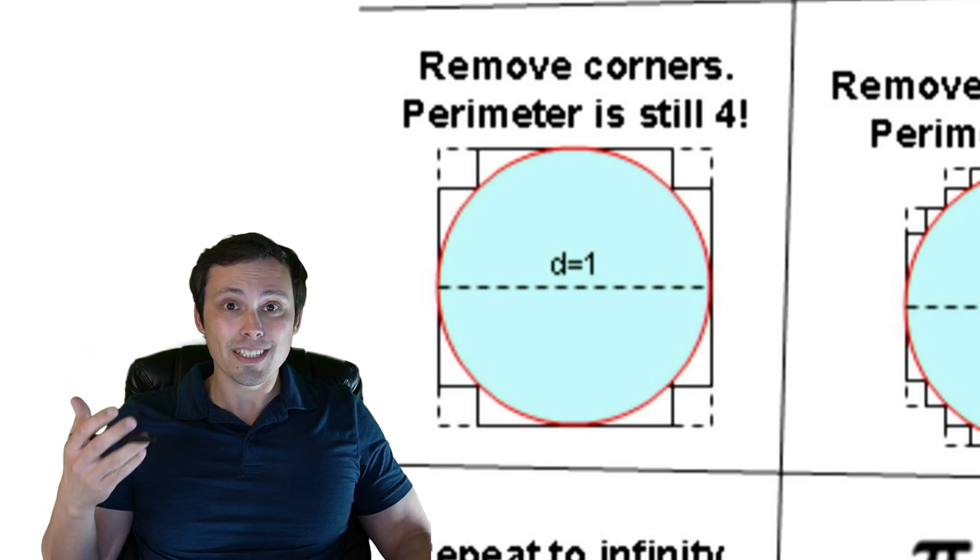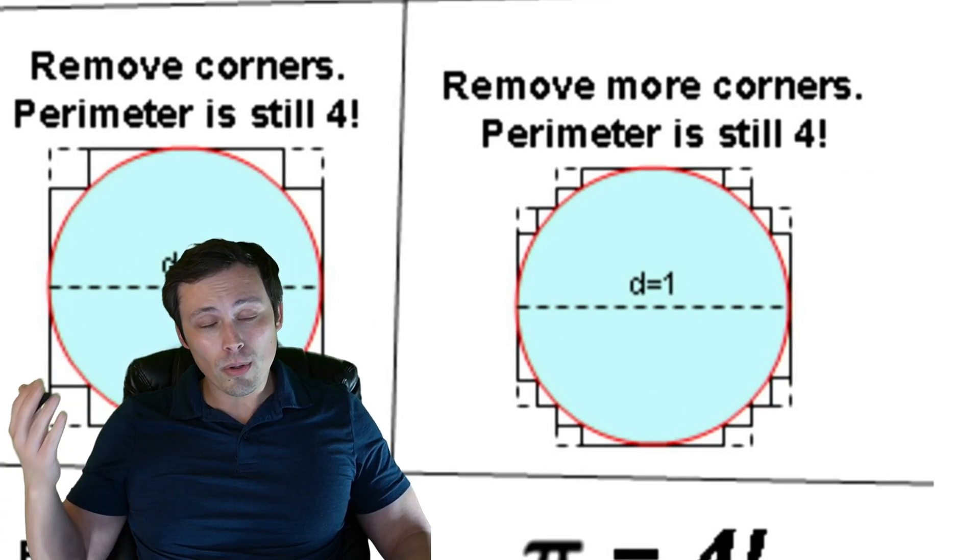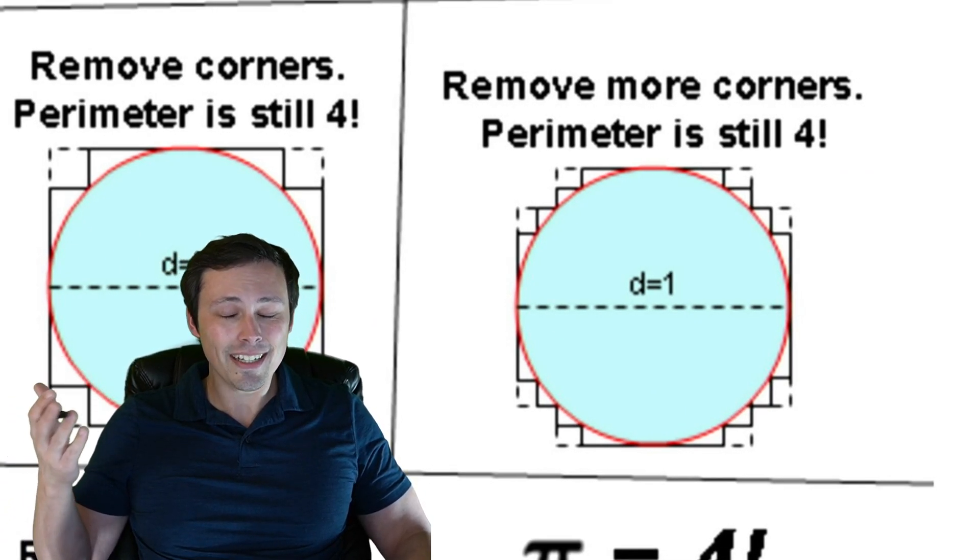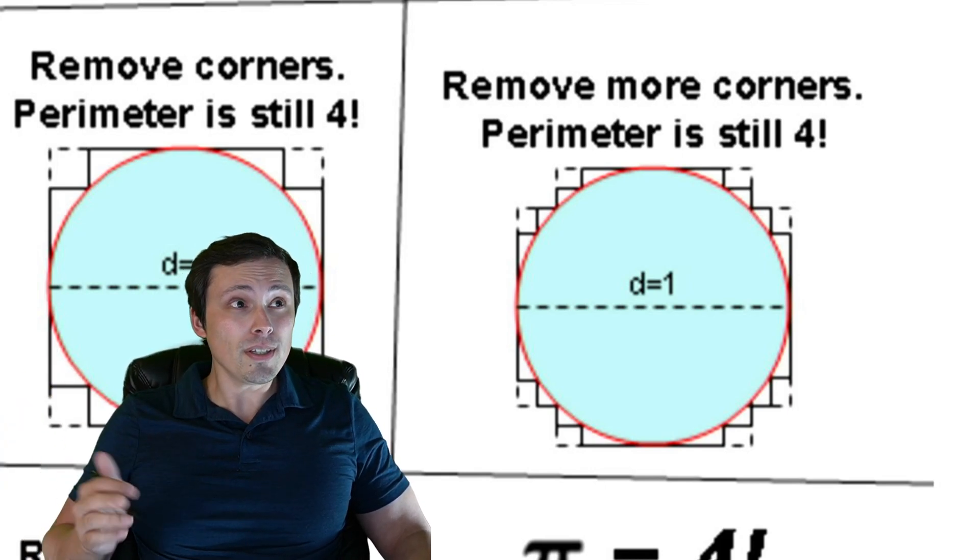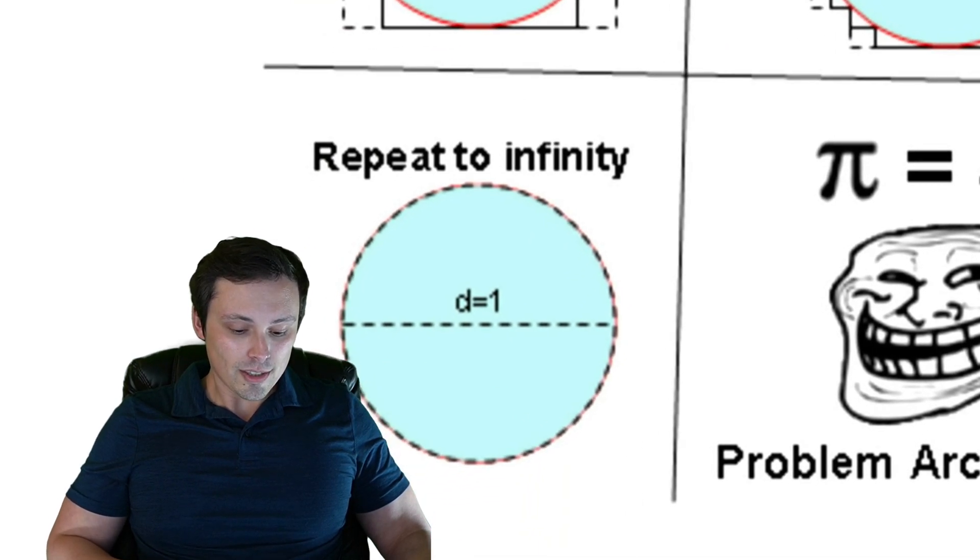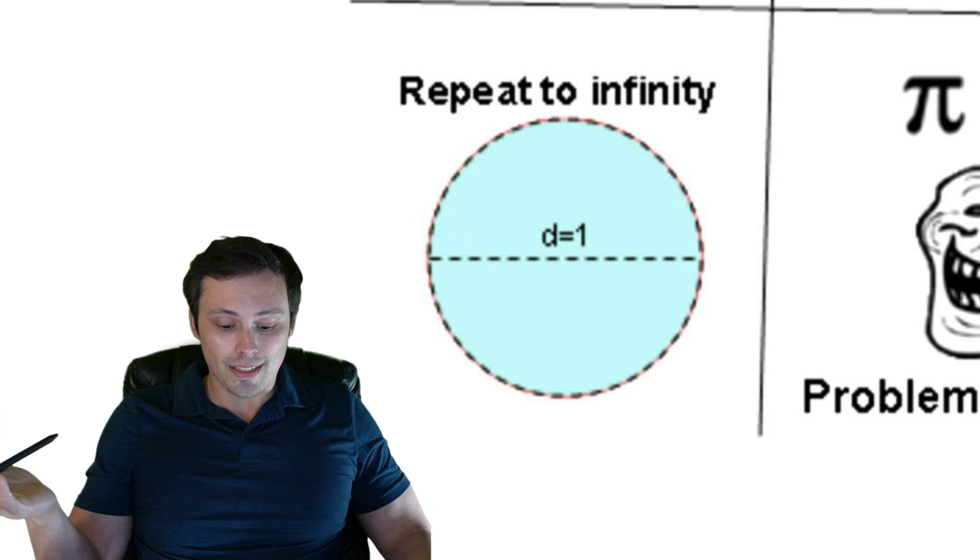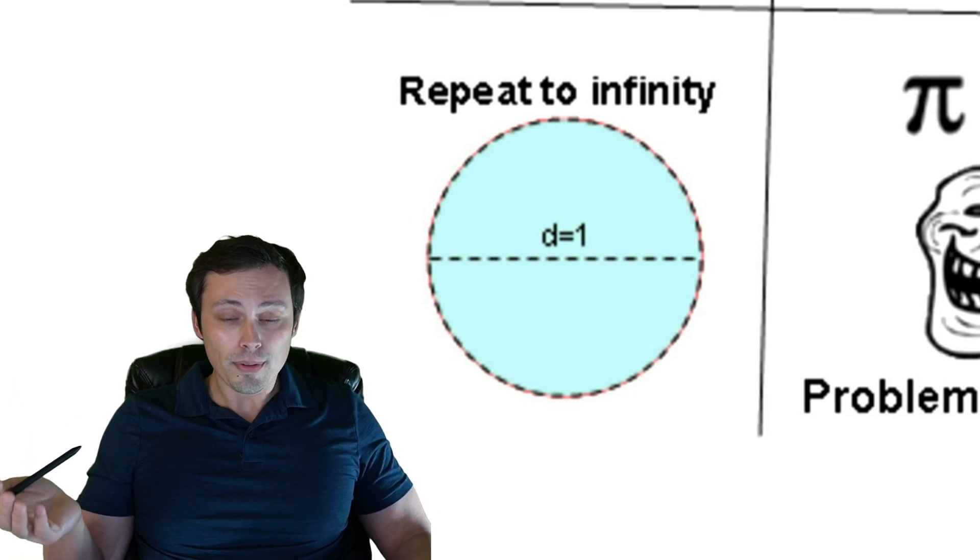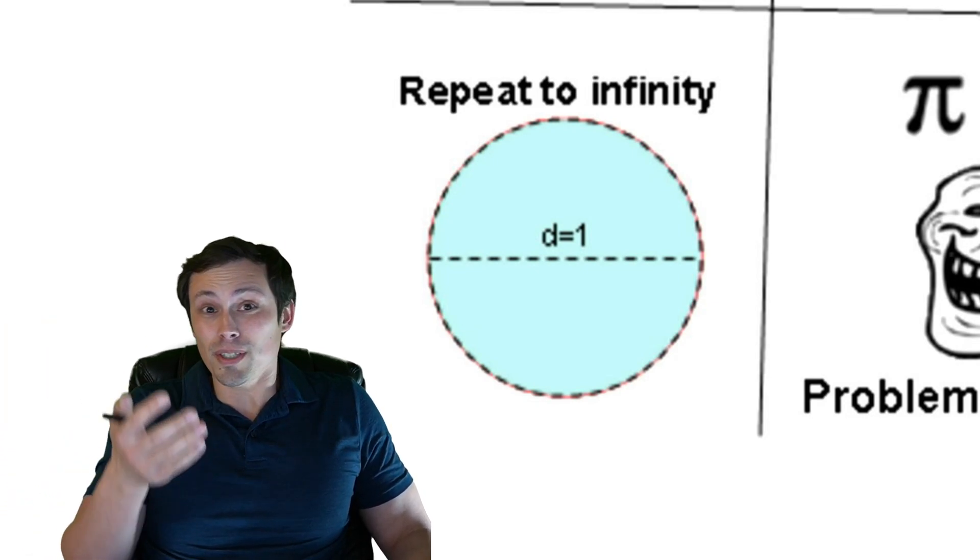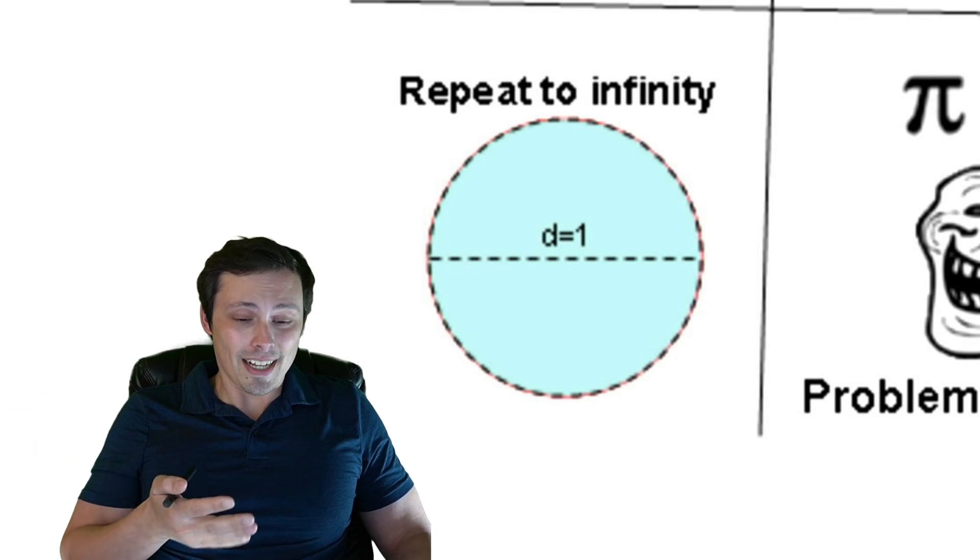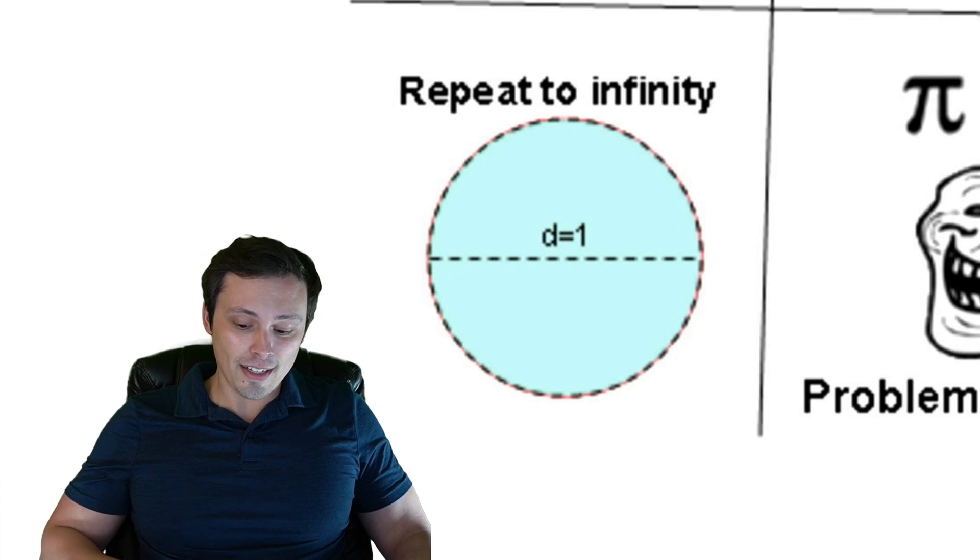Now we remove more corners, so we just continue this same argument and the perimeter remains 4. You could do this indefinitely, so it's basically saying repeat that to infinity and the shape that you're creating here has a perimeter of 4. But that perimeter is the circumference of the circle because if we do this infinitely, there wouldn't be any difference between that and the circumference of the circle—or so this meme is relying on for its argument.